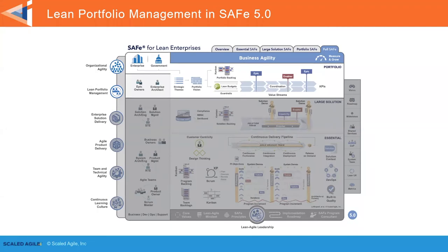We're introducing Lean Portfolio Management 5.0 in SAFe. What you are seeing here is the Portfolio SAFe configuration, which builds upon Essential SAFe — the bottom half of the framework. We now combine the team and program levels into just the essential level. The Portfolio SAFe configuration adds three basic competencies to the essential level: organizational agility, Lean Portfolio Management, and a continuous learning culture. This portfolio level also contains roles like Epic Owners, Enterprise Architects, and more, as well as the events and practices for Lean Portfolio Management. The spanning palette is now on the right.